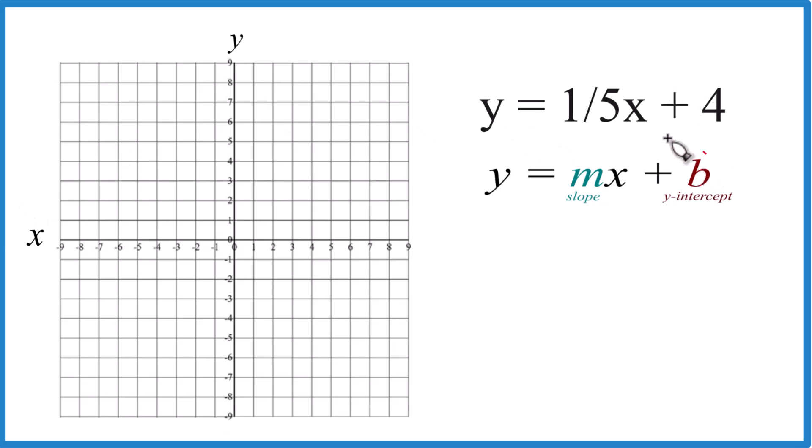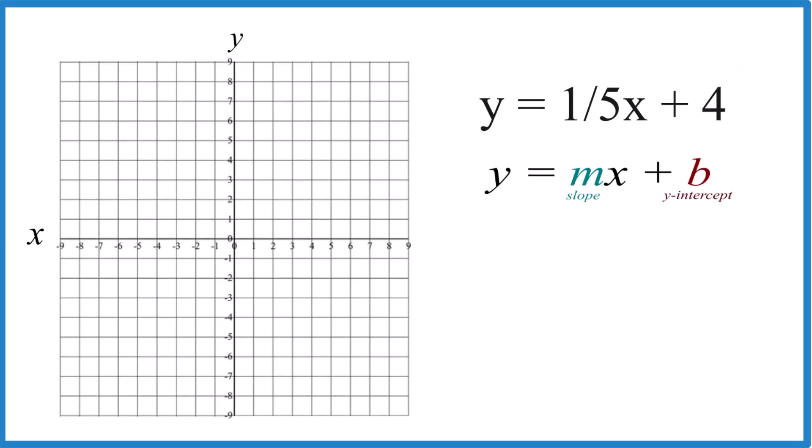So we have that y-intercept here. That's 4. So we're going to take and go to the y-axis, go to 4, and that's where our graph is going to cross the y-axis at 4.